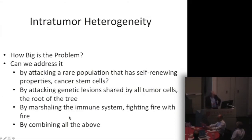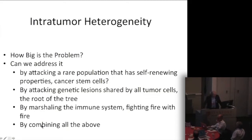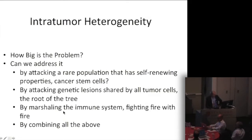Another idea is to analyze the genetic lesions shared by all tumor cells — those that arose at the root of the evolutionary tree, retained and required for continued survival of daughter cells — and find lesions that are druggable and shared by all tumor cells rather than heterogeneous within the population. A third idea is to marshal the immune system, which has many properties analogous to cancer in that it self-renews, adapts, mutates, and deals with a changing environment — so-called fighting fire with fire. And then, taking a page from the infectious disease handbook, using combinations with independent modes of action.